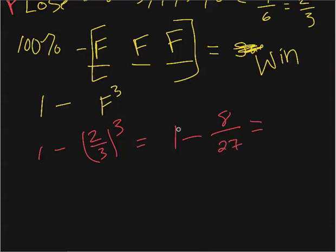Which amounts to, well, 27 minus eight is 19, is 19 out of 27. So the chances of me actually getting at least one win out of those three tosses, getting a one or a two at least one time is 19 out of 27.